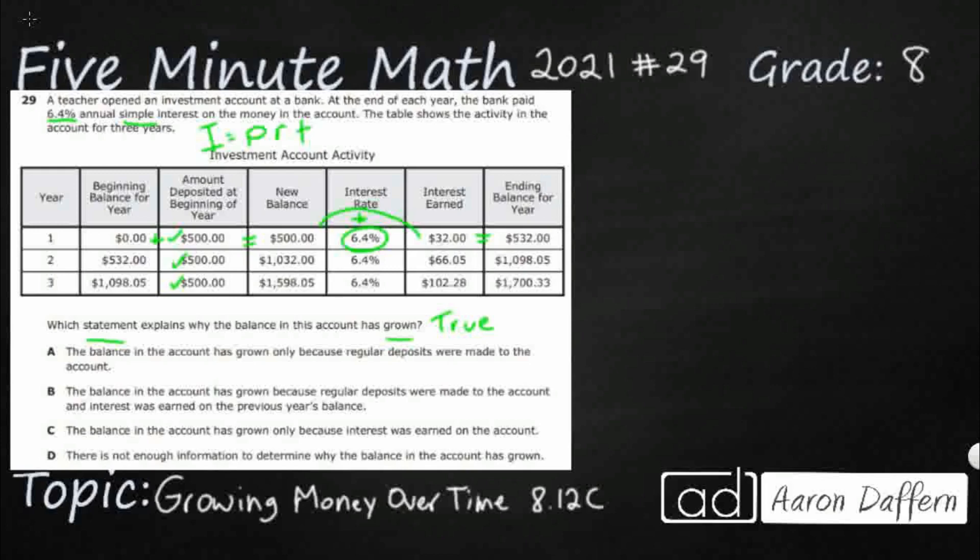Now you come back down to the second row. You're starting with your 532. You're still going to add that 500 that you do every year, but look at that. Now your balance is not just $1,000. It's $1,032 because you're including the $32 of interest that you were paid last year. You're still going to get interest on that 6.4%.